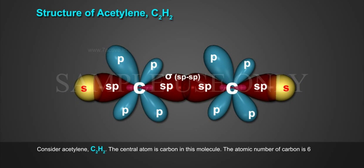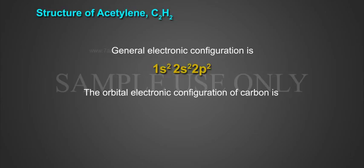The atomic number of carbon is 6, and general electronic configuration is 1s2, 2s2, 2p2.